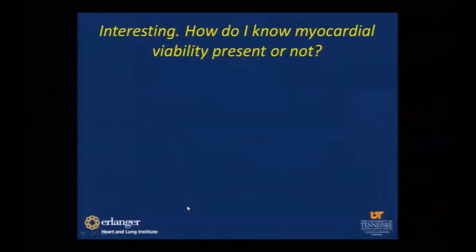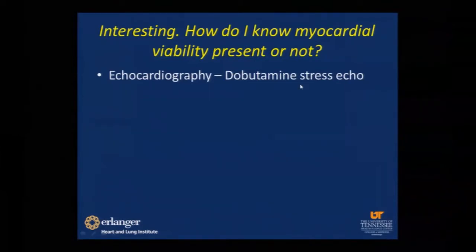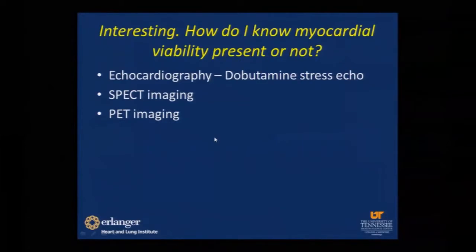Using the cardiac pad, we talked about the definition, but how do we test for viability? There are several modalities we can use to identify viable myocardium. The common modalities include echocardiography, especially the dobutamine stress echo, SPECT imaging using thallium mainly, technetium-based radiotracers, cardiac PET imaging using FDG, and cardiac MRI. There is literature emerging for cardiac CT, but it's still in early stages.